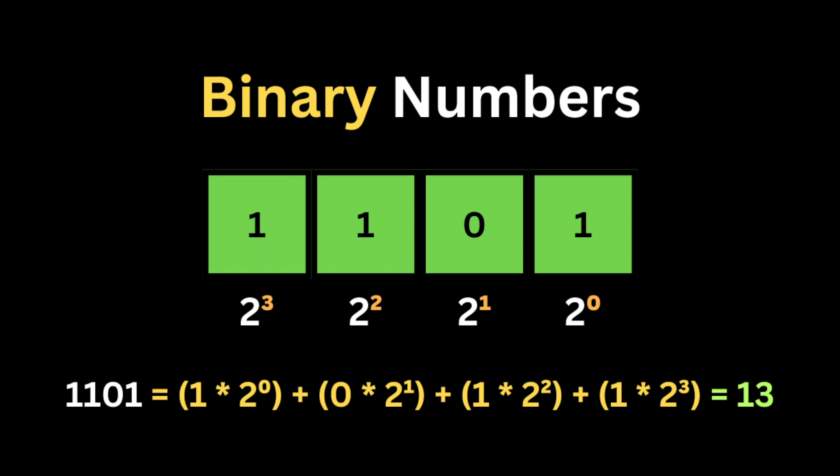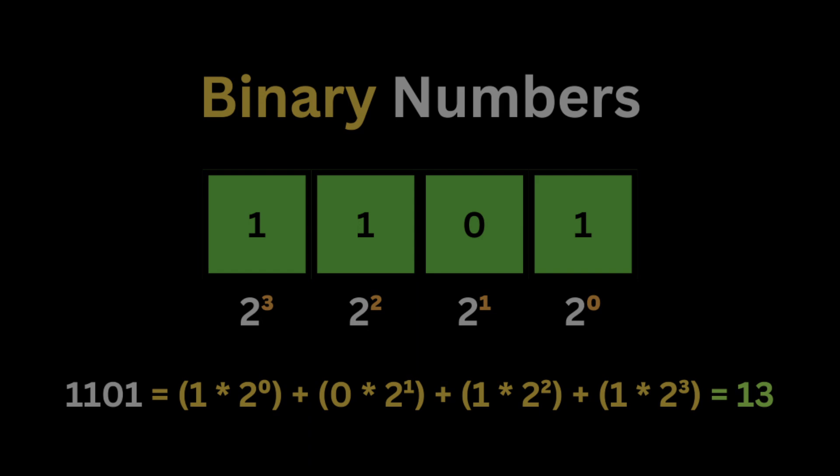All decimal numbers are base-10 numbers. On the other side, binary numbers are base-2 numbers. Binary numbers are also represented in columns, and each column represents a power of 2. For example, the first column is the value multiplied by 2 to the power of zero, then zero multiplied by 2 to the power of one, then one multiplied by 2 to the power of two, and one multiplied by 2 to the power of three. Adding everything together gives us 13 as a decimal number.